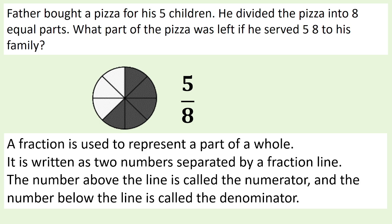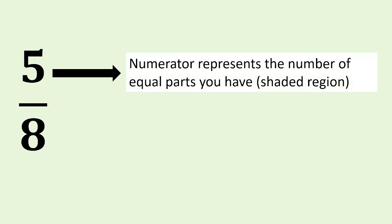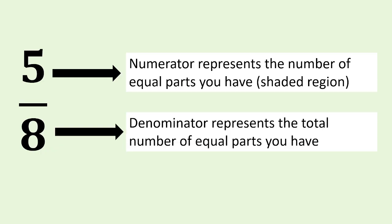A fraction is used to represent a part of a whole. It is written as two numbers separated by a fraction line. The number above the line is called the numerator, and the number below the line is called the denominator. Five is the numerator — it represents the number of equal parts you have or the shaded region. Eight is the denominator — it represents the total number of equal parts.